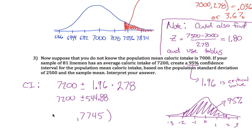That gives you 544.88. So if I do 7,200 plus this value, I get my upper limit is 7,745 if I round this off. And if I do 7,200 minus that number, I get 6,655 if I round it off. So I get my confidence interval.